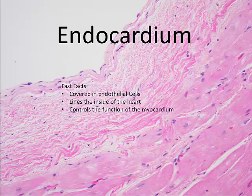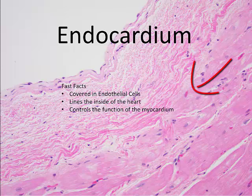Next is the endocardium. This layer is covered in endothelial cells on the luminal, or inside, surface and has connective tissue underneath, closer to the myocardium. You can see small blood vessels in this region.